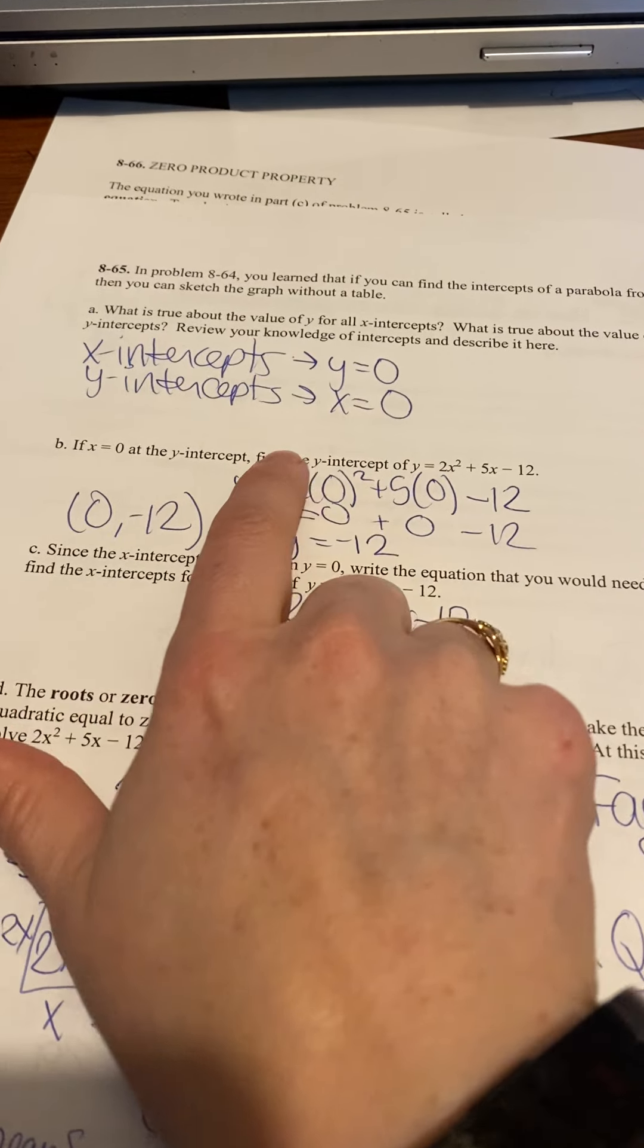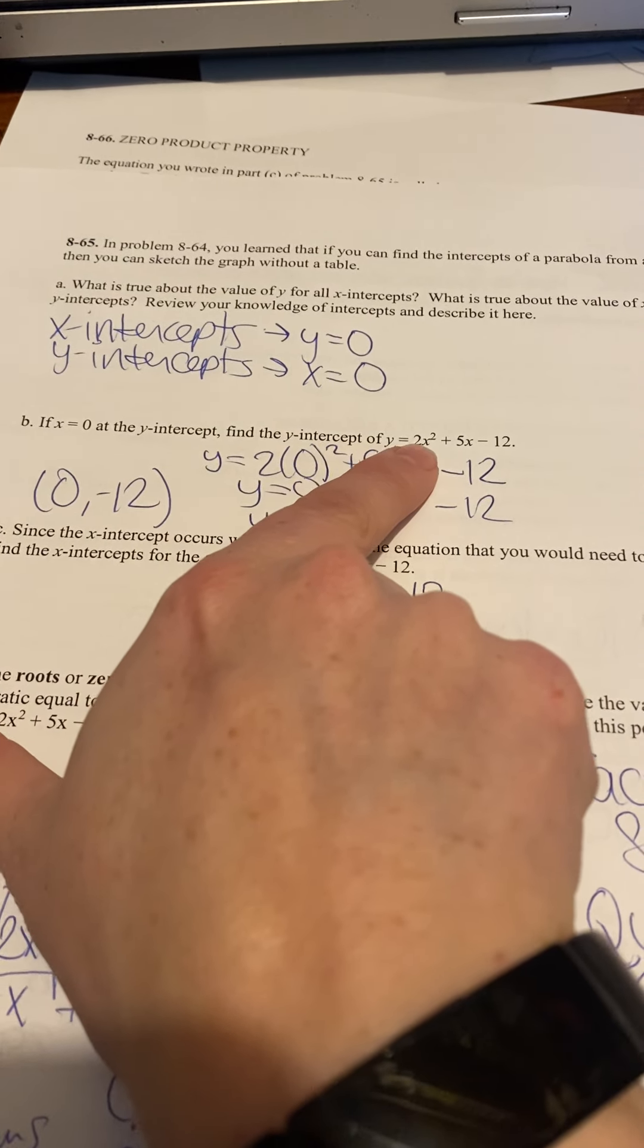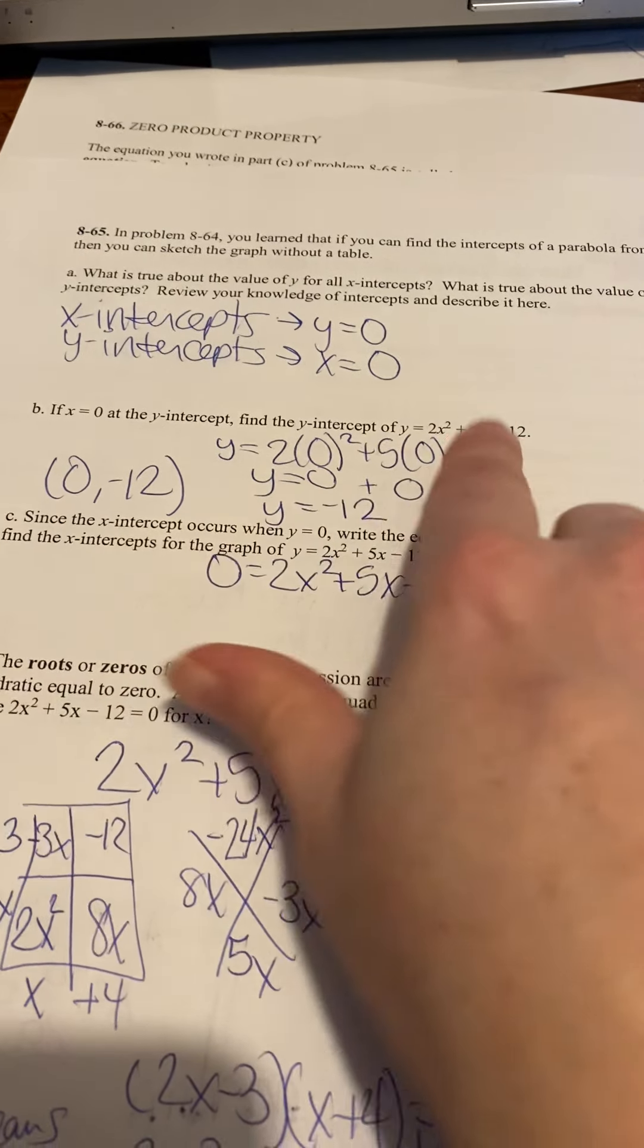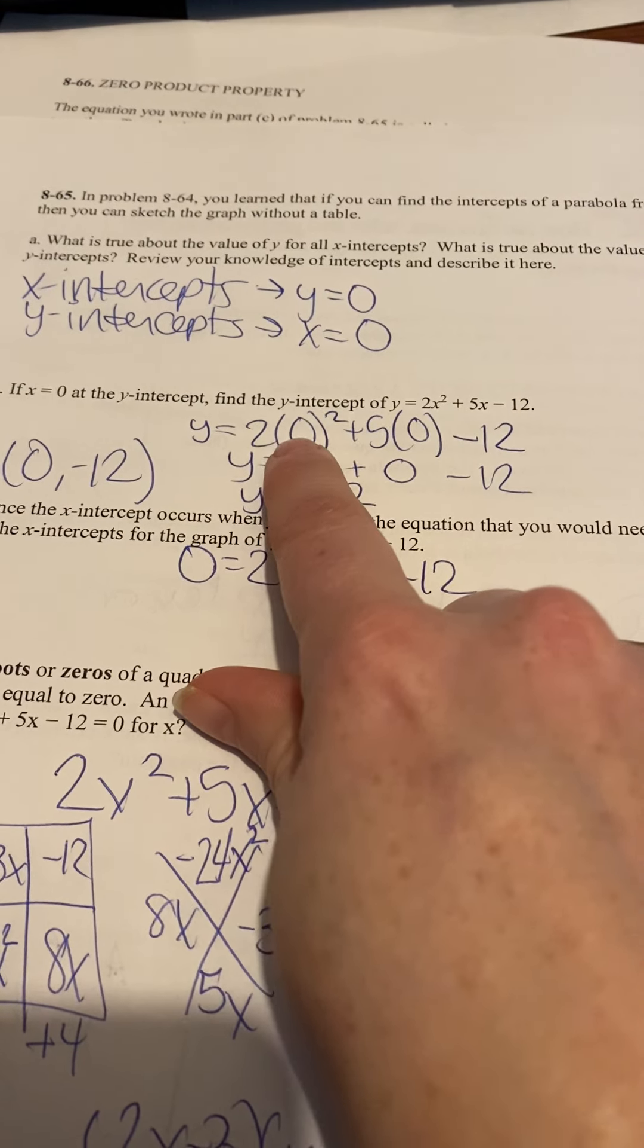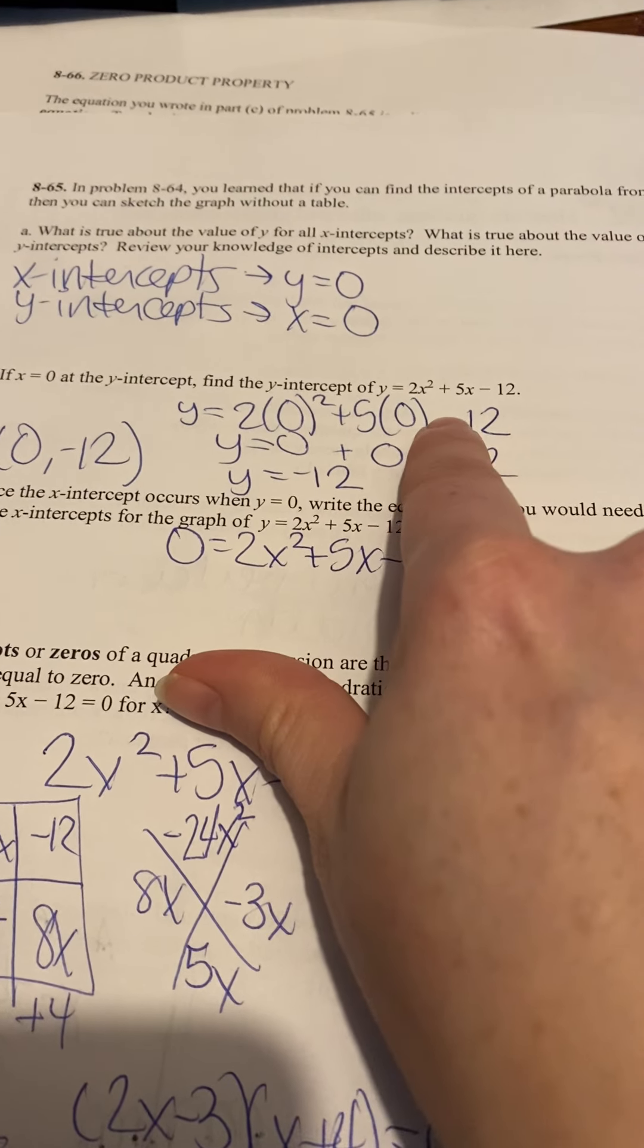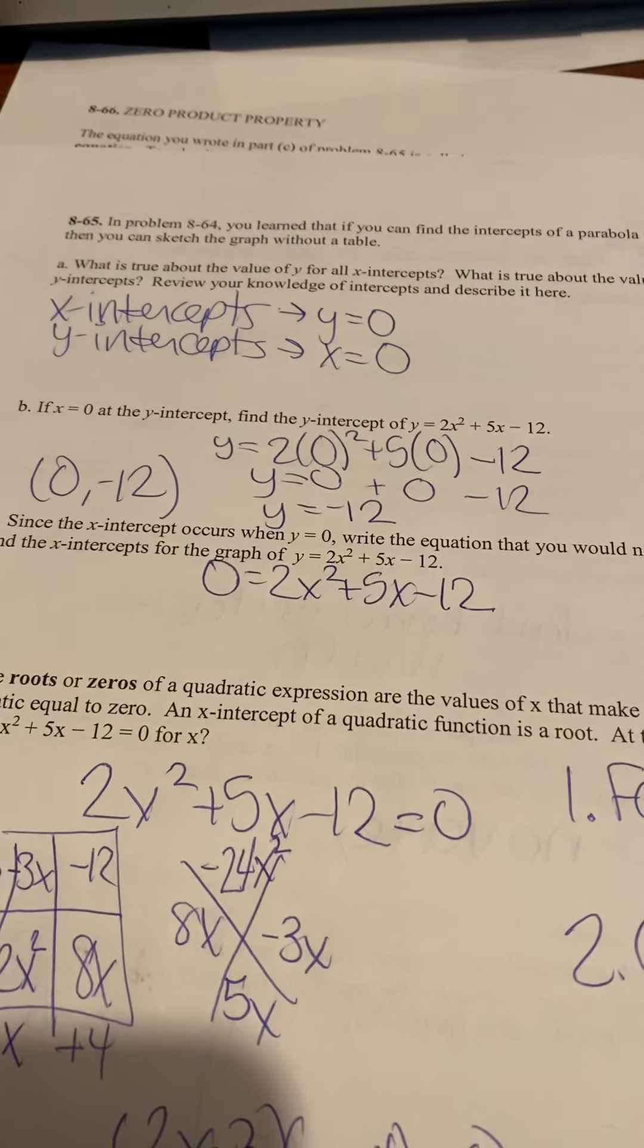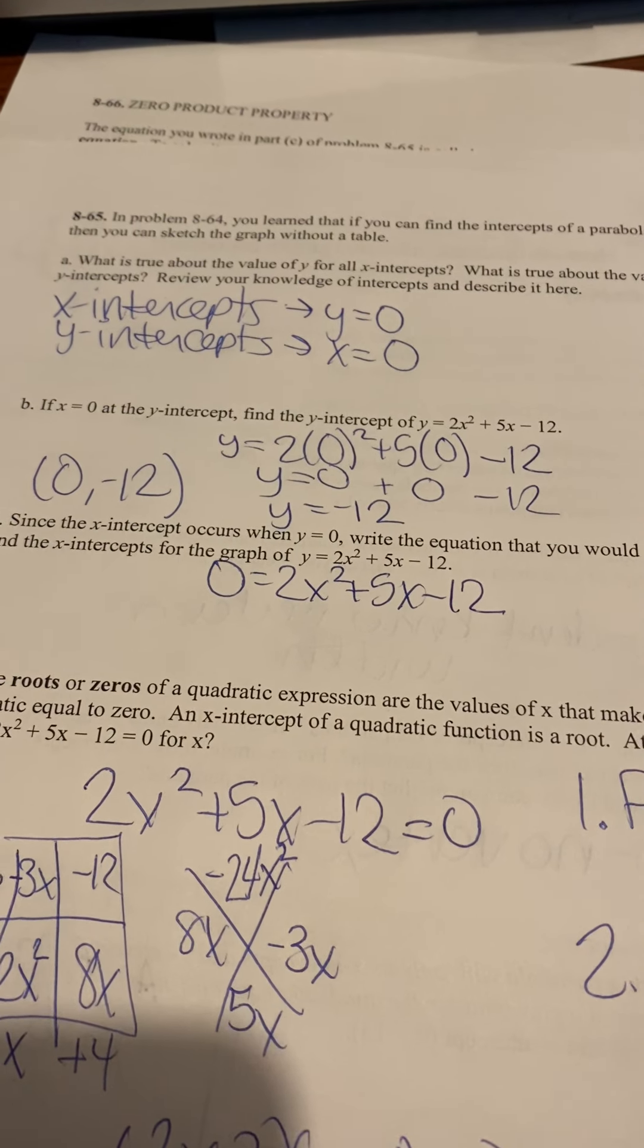If x equals 0 at the y-intercept, find the y-intercept of y equals 2x squared plus 5x minus 12. Well, if x equals 0, you're going to plug that in. 2 times 0 squared is 0, 5 times 0 is 0, minus 12. So y would equal negative 12.